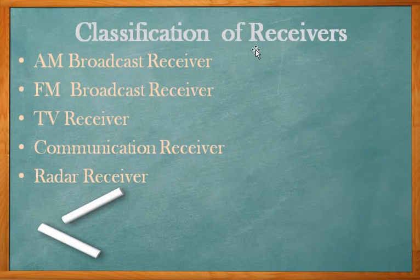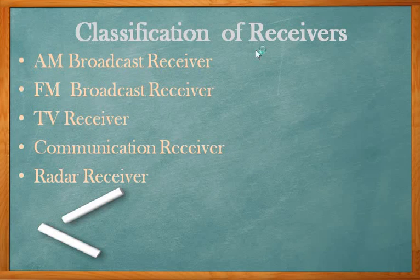Now the classifications of the receivers. Just as transmitters are classified, receivers are also classified. The receivers are classified into five types: amplitude modulation (AM) broadcast receivers, frequency modulation (FM) broadcast receivers, television or TV receivers, communication receivers, and radar receivers.